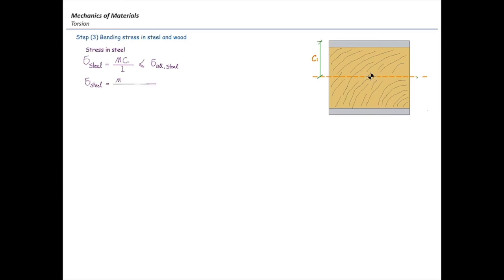I'm going to plug in the values and solve for the moment. With an allowable stress in steel of 160 MPa, that gives a maximum moment of 26.75 million newton-millimeters. This is the maximum moment we can apply before the steel plates reach their limit.